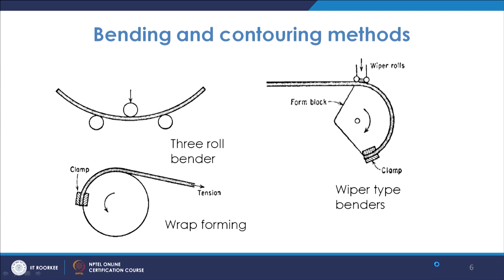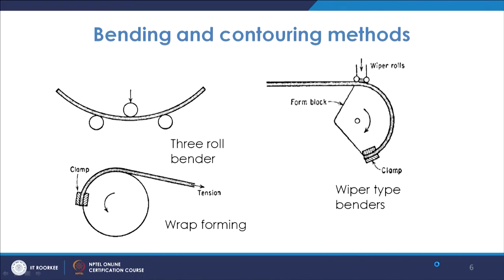Different types of bending and contouring methods are also sheet metal operations. A three-roll bender can be used, as well as wrap forming where a clamp applies tension force while rotating to stretch and bend the material. Wiper-type benders use wiper rolls and a form block to bend the material into a particular shape.